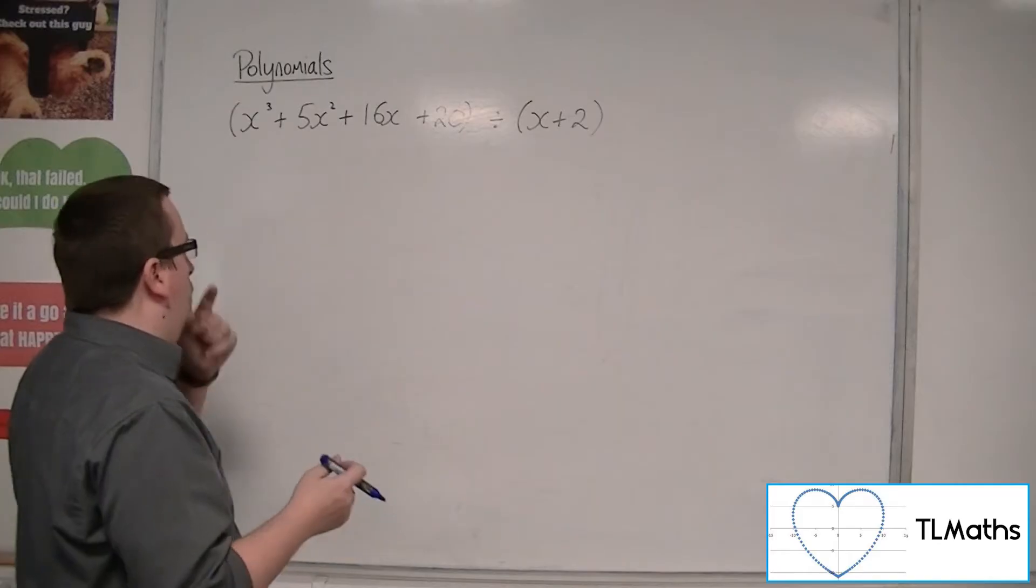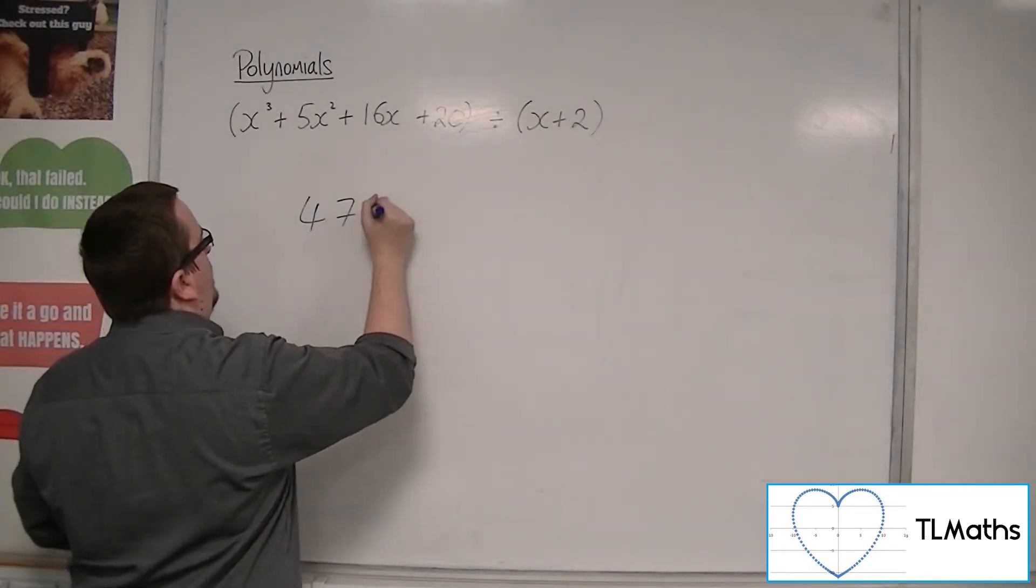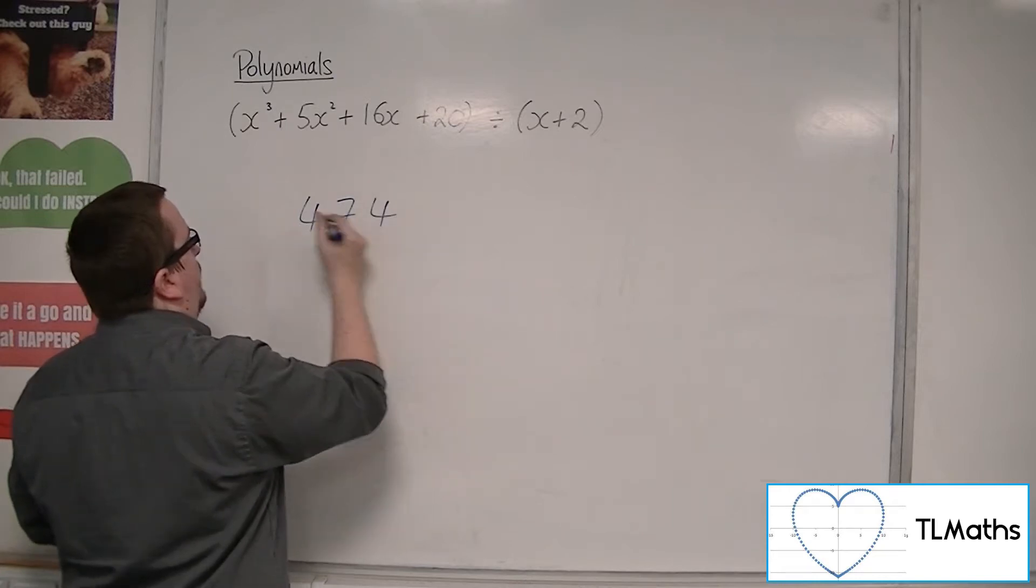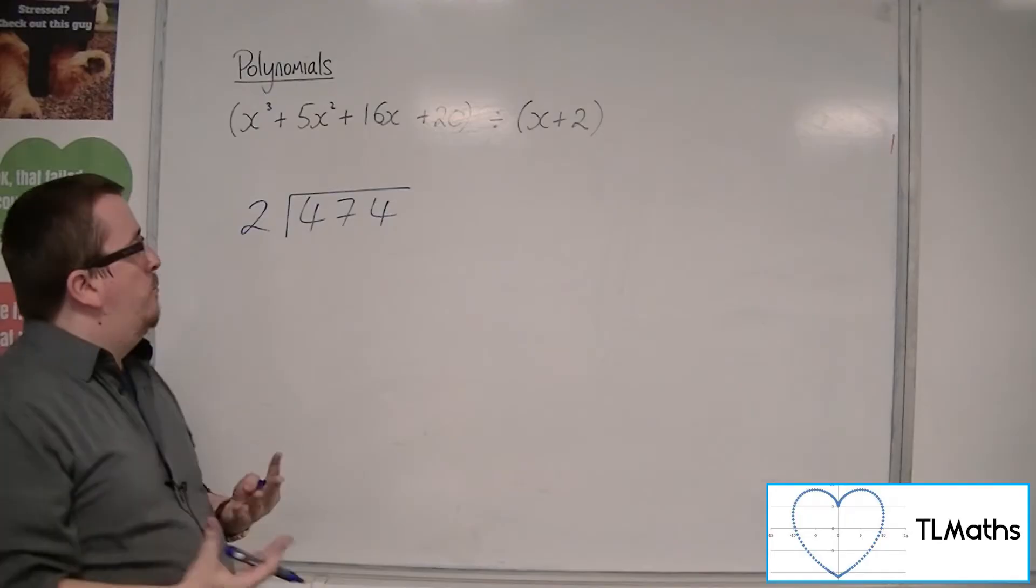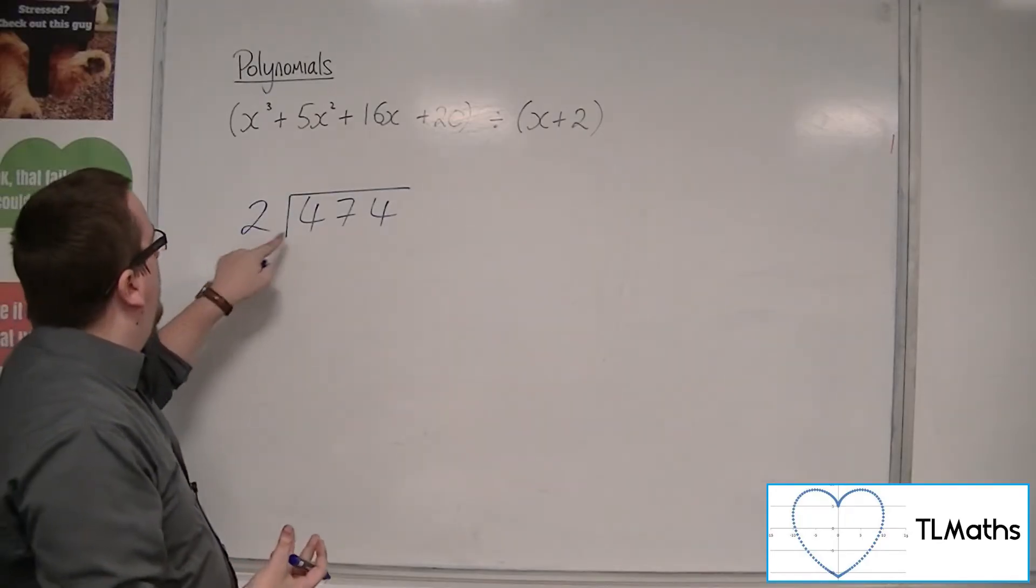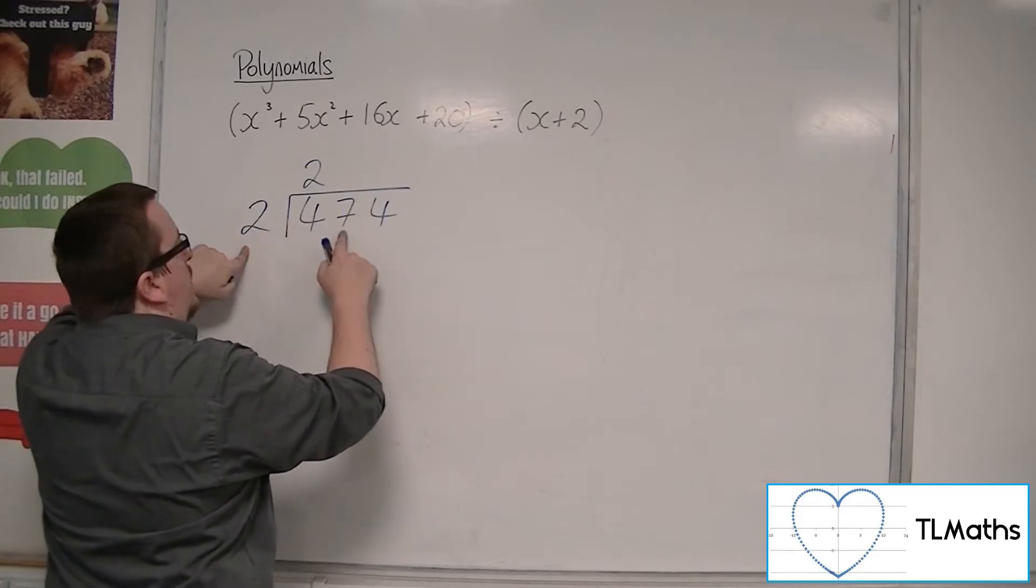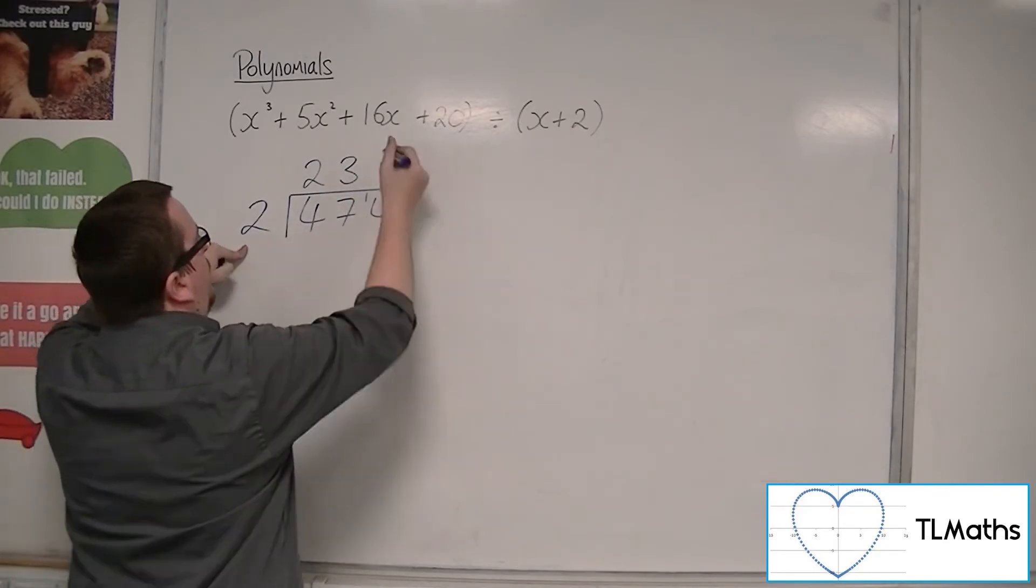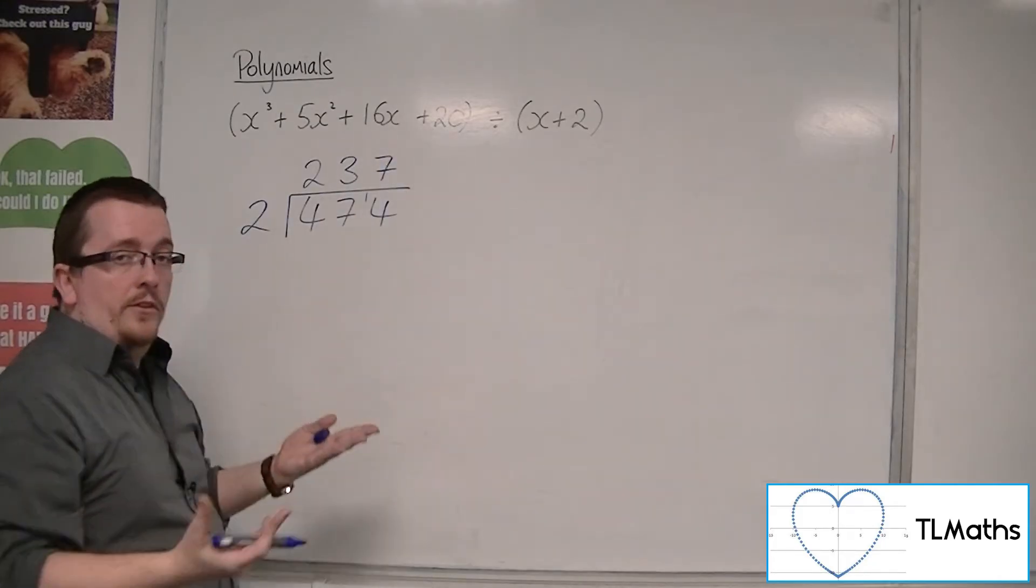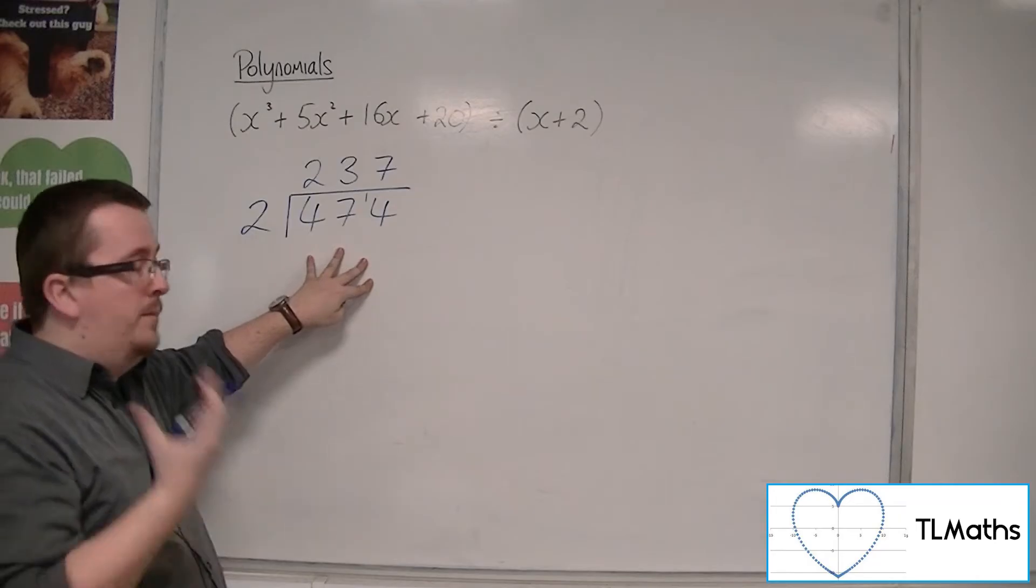For example, if you had to do 474 divided by 2, the way you were probably taught was: 2s into 4 go twice, 2s into 7 go 3 times remainder 1, and 2s into 14 go 7. So the answer is 237. That's the short division method, or bus stop method.